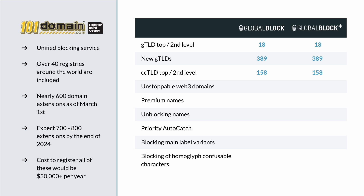You can see the blocking coverage in the table. GTLDs, the top level and the second level — 33% are covered by GlobalBlock. New GTLDs — 65% are covered by GlobalBlock. Country codes — about 15% are currently covered. Web3 and blockchain domains: one of the largest players in this new space, Unstoppable Domains, is covered.